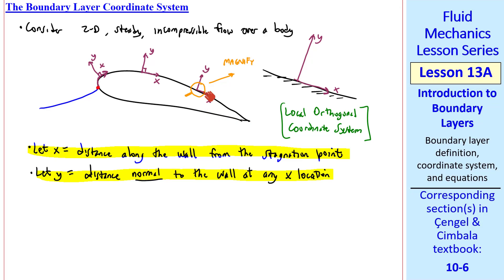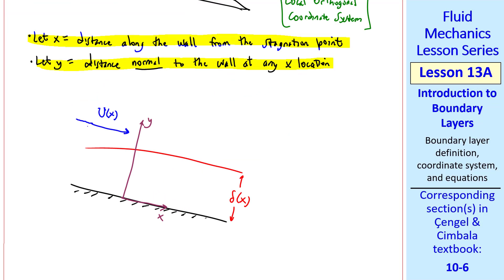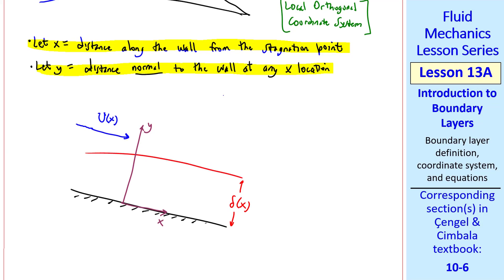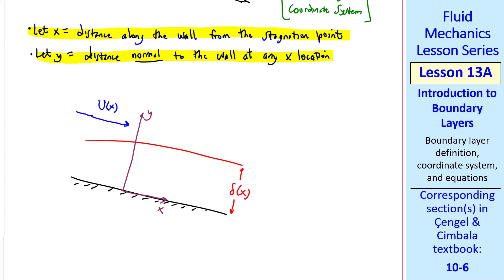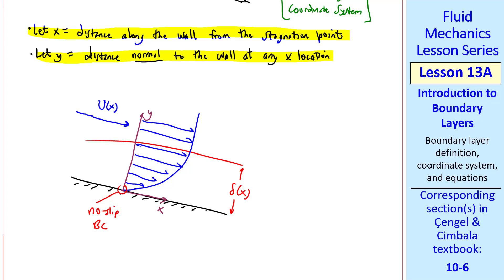I'll now draw the velocity profile in this magnified view. This is our boundary layer. The outer flow has a speed U of x, and note that this outer flow speed will vary along x since the body is curved and has finite thickness. The velocity profile must satisfy the no-slip boundary condition at the wall, and the speed approaches U of x at the edge of the boundary layer. Delta is typically defined as the 99% boundary layer thickness.